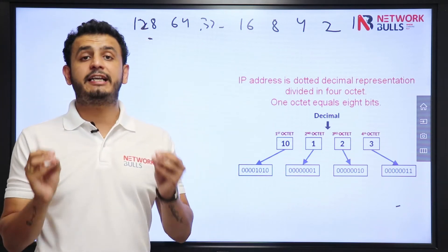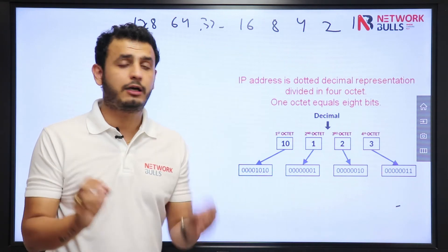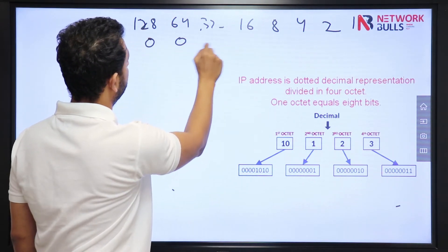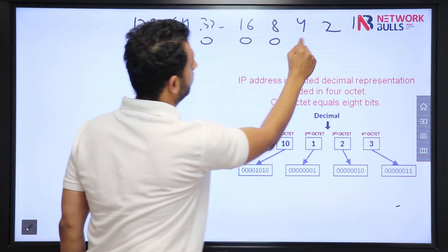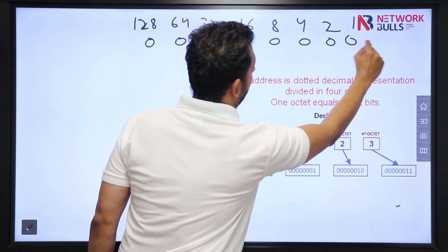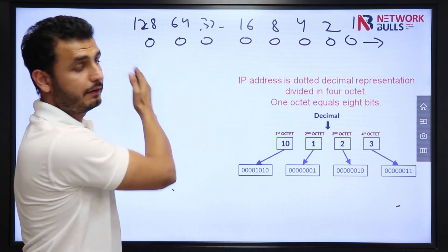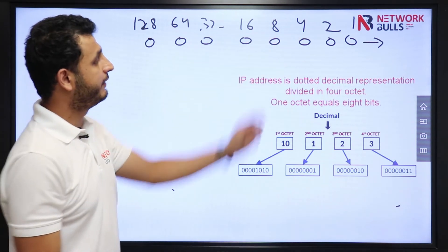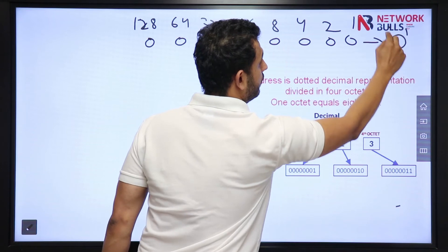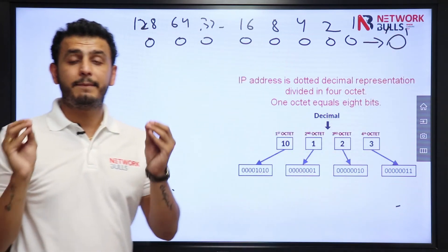If I turn off all the bits, it means if I mark all bits to 0, what value will I get? Sum them up — there is no on bit, so the total will be 0. So 0 is the minimum value.